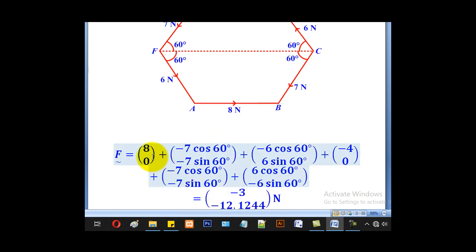Next part is to resolve horizontally and vertically. We shall start with 8. 8 is entirely horizontal, so it will be 8, 0. Now 7 is inclined at an angle of 60. Meaning it will be horizontally negative because it's going to the left. Negative 7 cos 60. And vertically it will also be negative going downwards. Negative 7 sin 60.